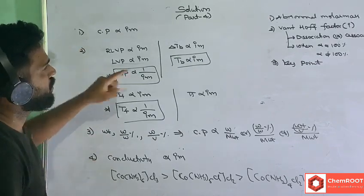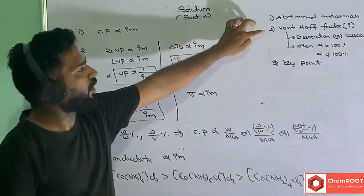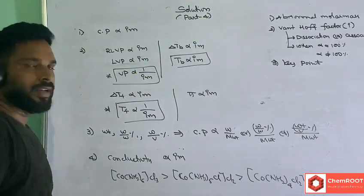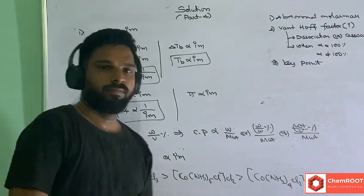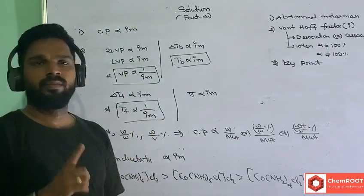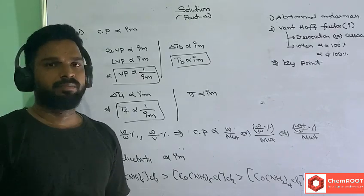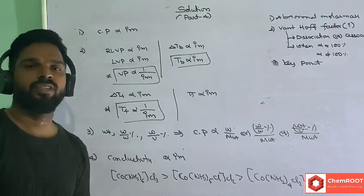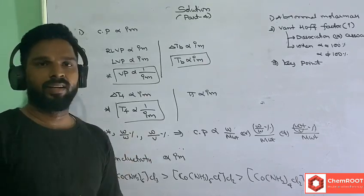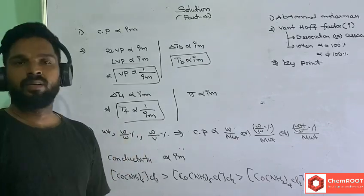If there are no counter ions, i = 1, and conductivity of these complexes is directly proportional to i × M (molarity). These are the key points related to solutions. We discussed Part 1: Henry's Law, Part 2: liquid solutions, Part 3: colligative properties, and Part 4: Van't Hoff factor. Thank you for watching.